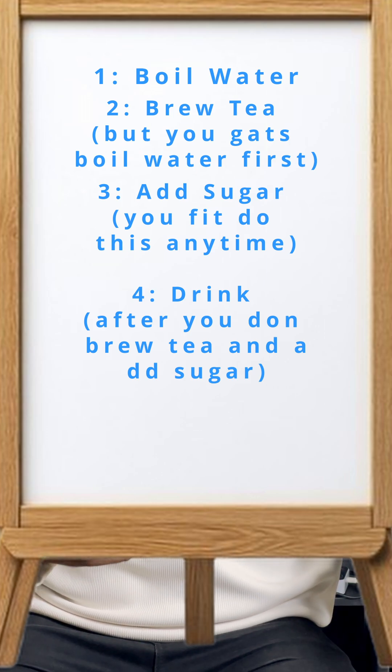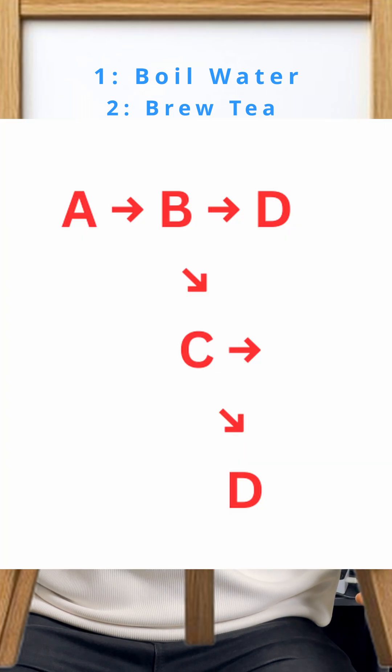So the graph will look like this on my board. You'll notice the correct order can be A to B to C to D, or A to C to B to D.